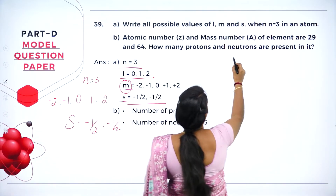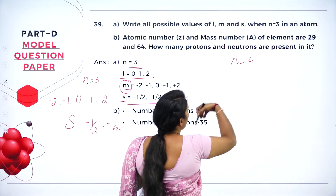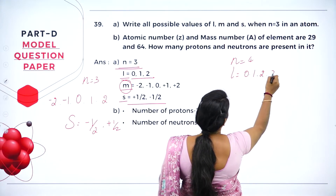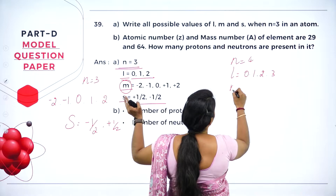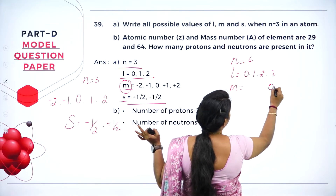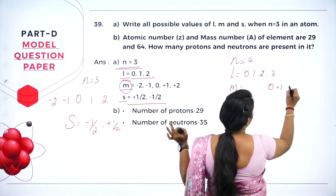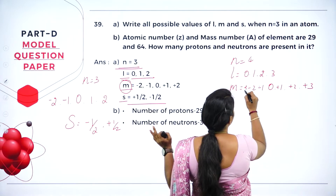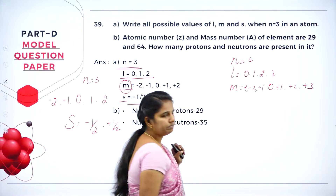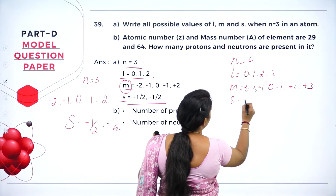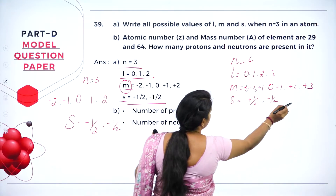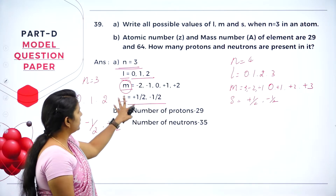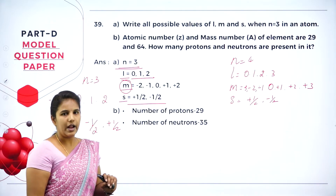Suppose if N = 4, the L values would be 0, 1, 2, and 3. The M values would be 0, +1, +2, +3, −1, −2, −3. The S value remains +½ and −½. This is how, for any given N value, we calculate the M, L, and S values.